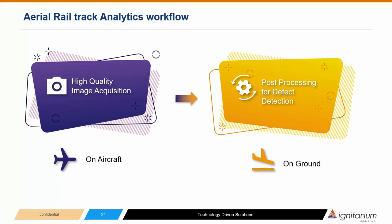The track analytics workflow includes two parts: image acquisition on the aircraft, and detailed defect detection on the ground. To avoid intrusiveness, the aircraft will be flying at standoff distances — usually 1,000 to 1,500 feet from the actual rail track. Long focal-length lenses capture high-resolution video, normally 4K at 30Hz or 4K at 60Hz. Note that we're capturing continuous video, not still images, because the spatio-temporal nature of video can be exploited for complex use cases. After landing, the video footage is transferred to ground-based compute systems for detailed analytics.